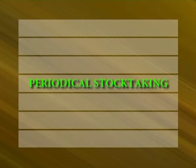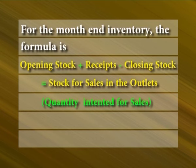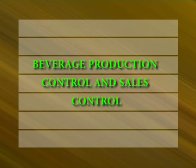Periodical stock taking: For the month-end inventory, the formula is: opening stock plus receipts minus closing stock equals stock consumed for sales in the outlets. The calculation at cost price yields the price of goods at cost price. The same formula calculated at selling price of every item gives the sales potential of the outlet. This leads into beverage production control and sales control.